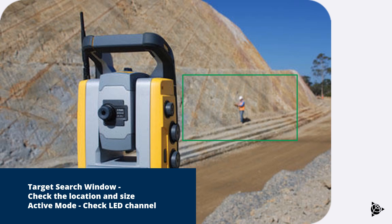If you're using active mode, check the LED channel to make sure it's correct and matching the total station. Otherwise, during the total station search, it will pass over the prism altogether.